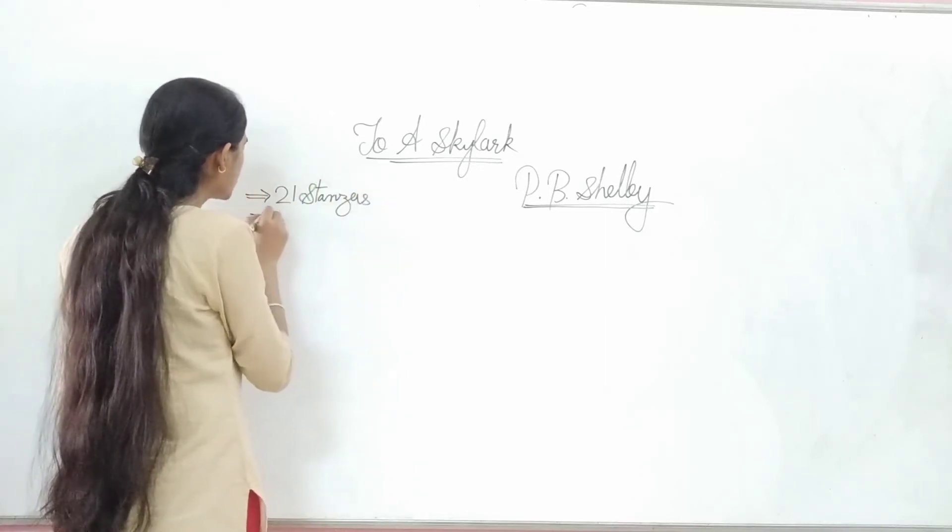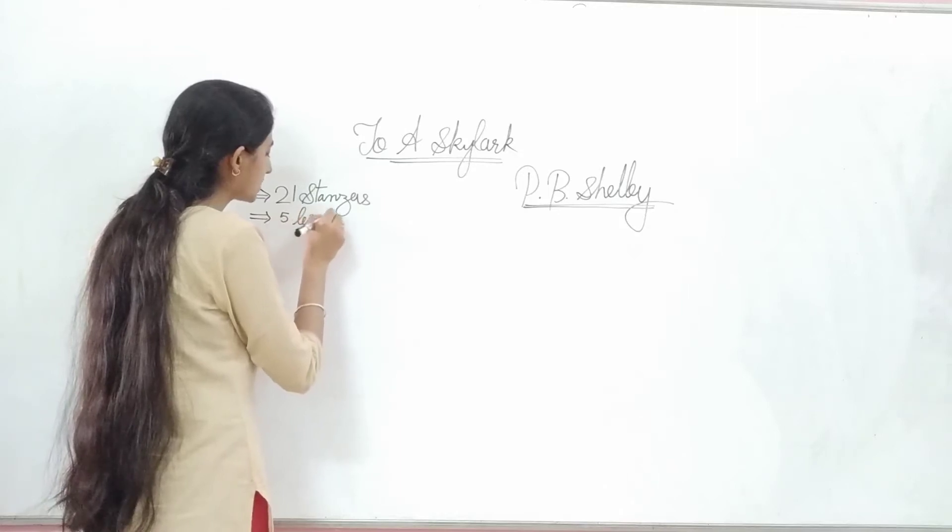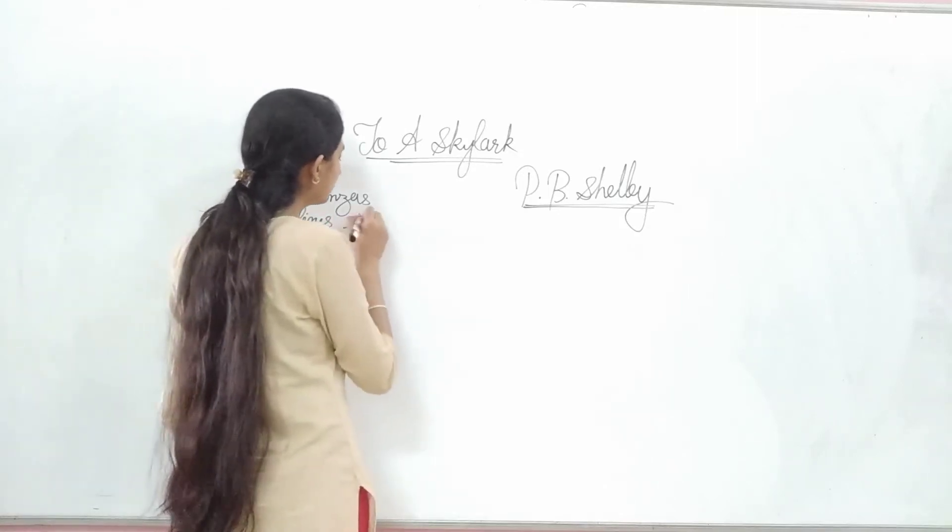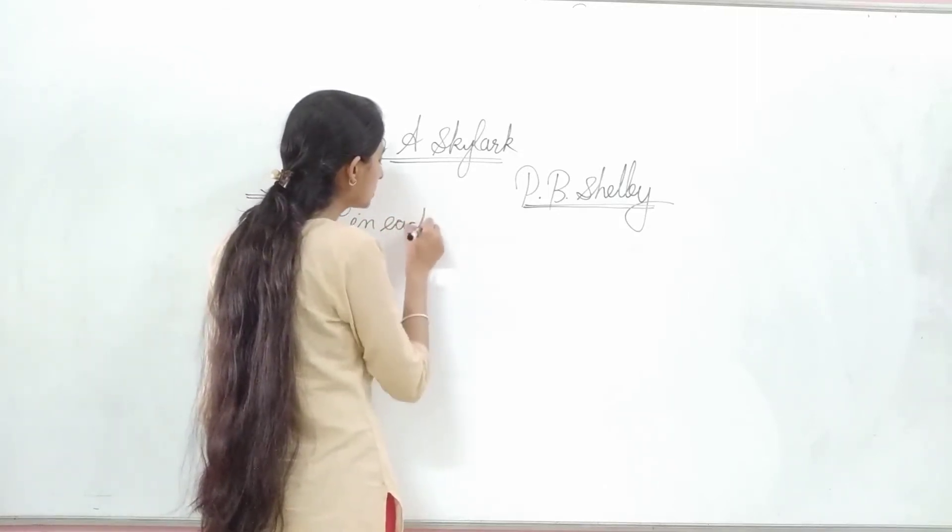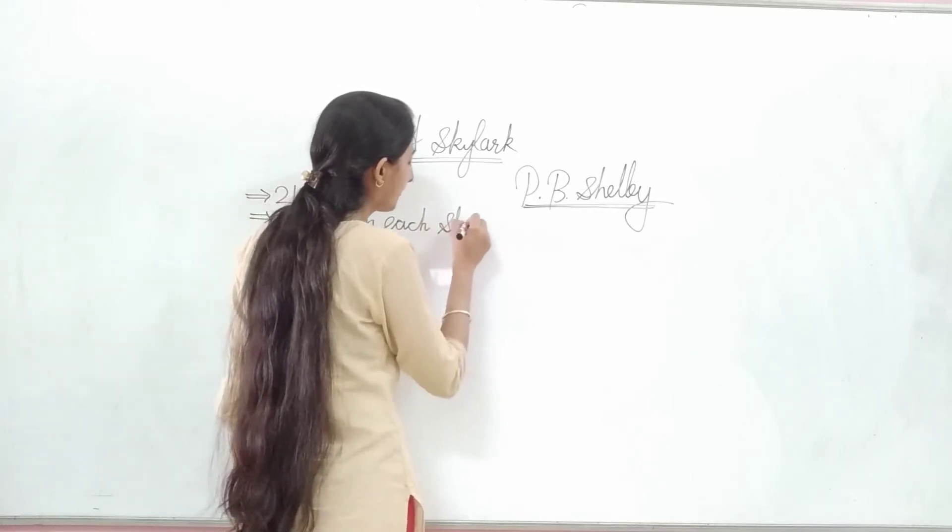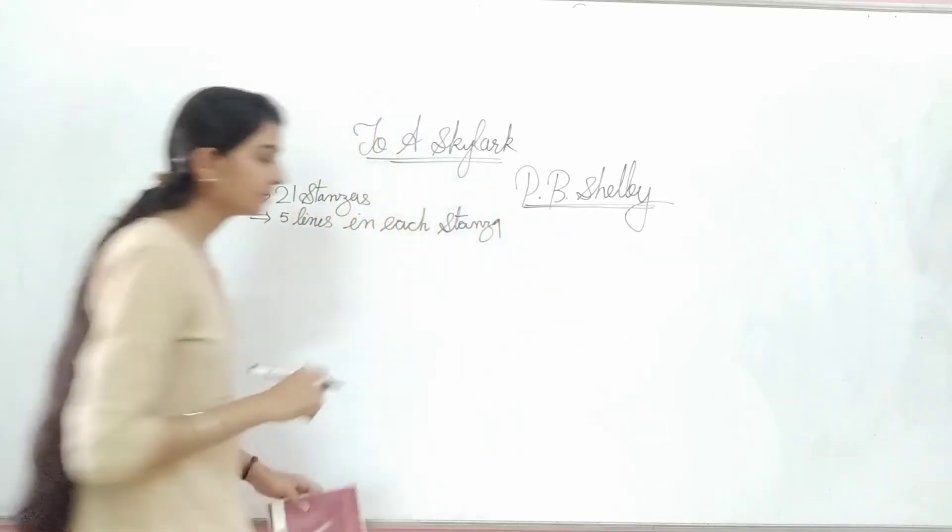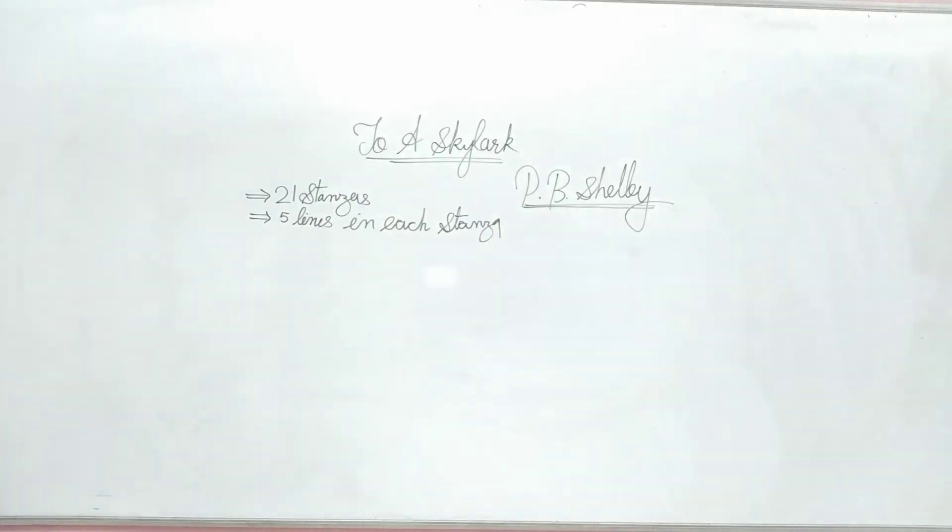This stanza has five lines in each stanza. The poem was completed in 1820. The poem was completed in June and is included in the glory of English literature.